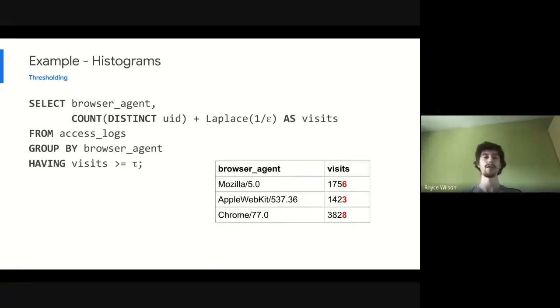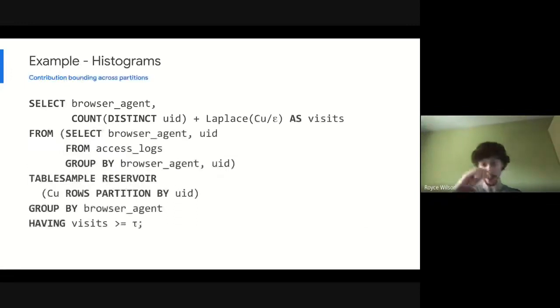In particular, we can imagine maybe there's a whole bunch of different browser agents and a given user visits our web page using many of these different browser agents. If we subtract their contribution from our database and run the query again, we're going to see a change in the number of visits across every single row, every single browser agent that they use. The overall number of visits changed in that query is going to be much larger than the corresponding amount of noise that we have been adding. And we're not satisfying the definition of epsilon delta differential privacy to see what the parameters that we say we are.